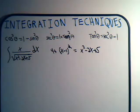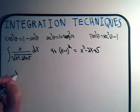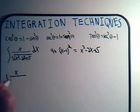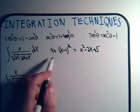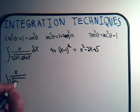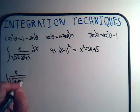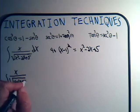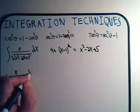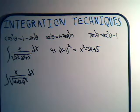Now we're going to rewrite the integral. Under the square root sign we're going to have 4 plus (x minus 1) squared, dx.